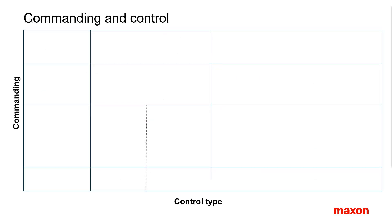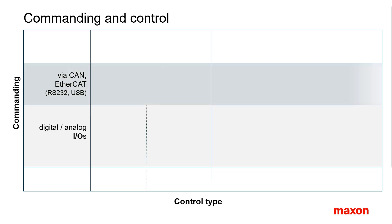We need to look at the Maxon controller families not only with focus on what kind of control they are made for, but also with focus on how they are commanded. The simplest way of commanding is by digital and analog inputs and outputs — for example, setting a speed by an analog voltage or changing direction with a digital high-low voltage signal. More sophisticated systems use bus communication with a master unit.